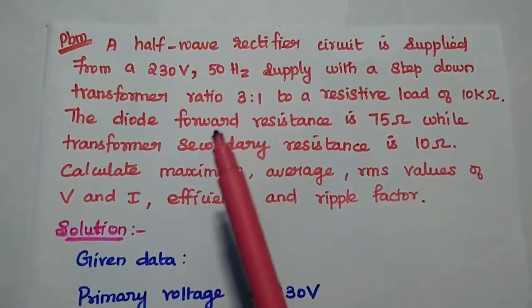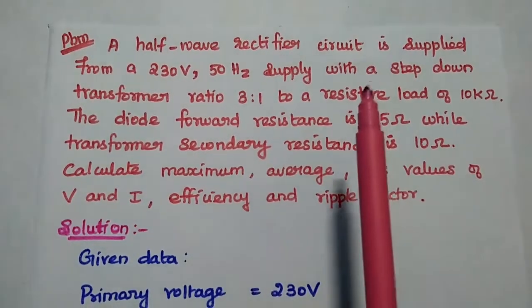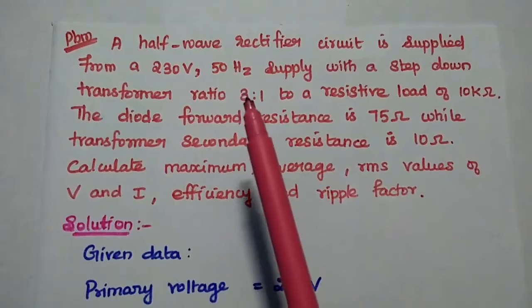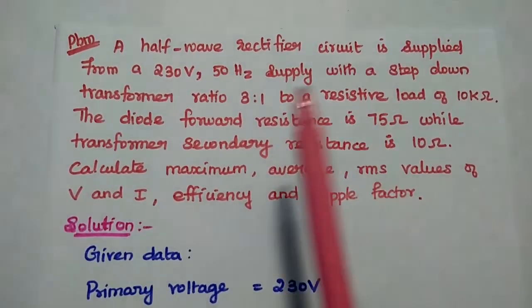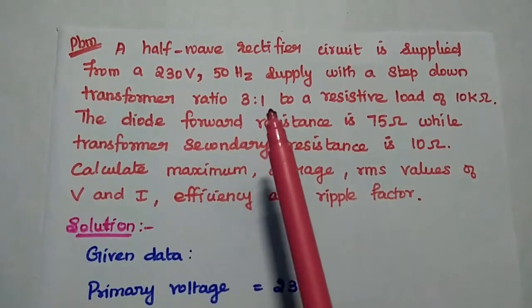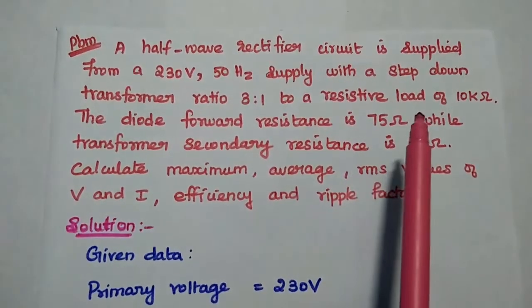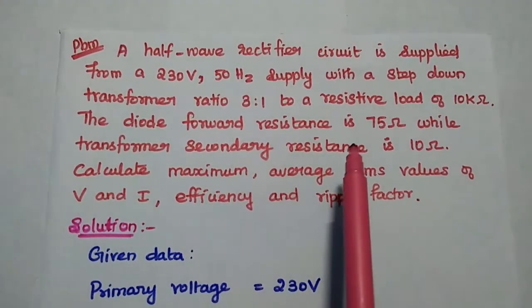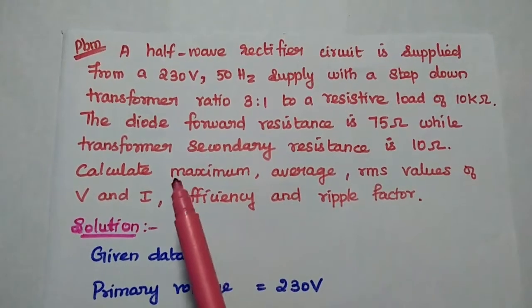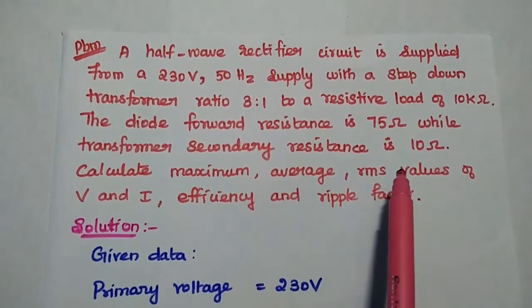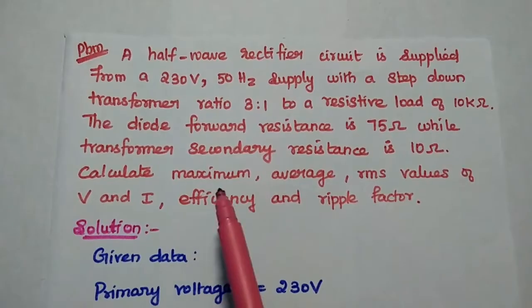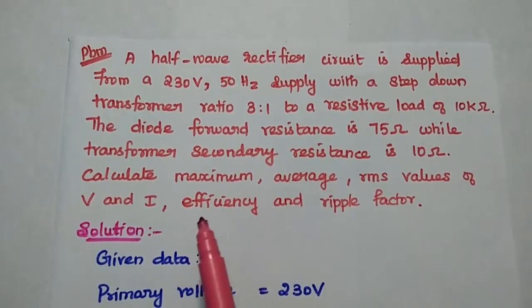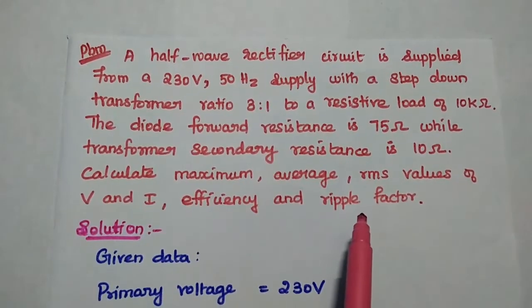For the first problem: a half wave rectifier circuit is supplied from a 230 V, 50 Hz supply with a step-down transformer ratio 3:1 to a resistive load of 10 kΩ. The diode forward resistance is 75 Ω and the transformer secondary resistance is 10 Ω. Calculate the maximum, average, and RMS values of voltage and current, efficiency, and ripple factor.